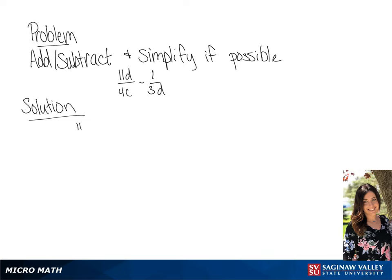We have 11d over 4c minus 1 over 3d. We need a common denominator. In this case it's going to be 12cd. So we're going to multiply the first fraction by 3d over 3d,